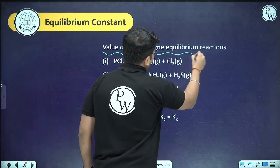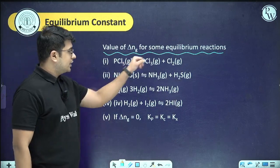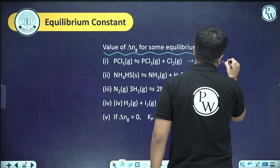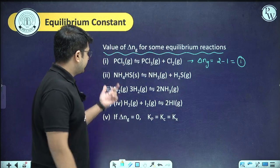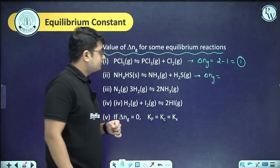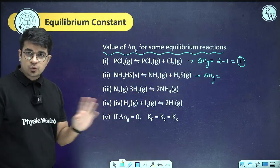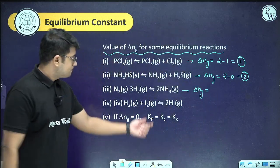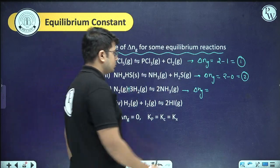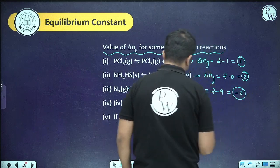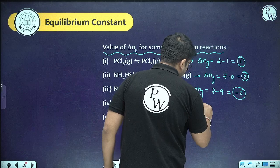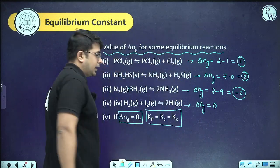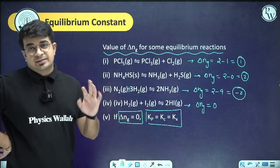Calculating ΔNg for various reactions: For PCl₅(g) ⇌ PCl₃(g) + Cl₂(g): ΔNg = 2 − 1 = +1. For CaCO₃(s) ⇌ CaO(s) + CO₂(g): ΔNg = 1 − 0 = 2 (only gaseous moles counted). For N₂ + 3H₂ ⇌ 2NH₃: ΔNg = 2 − 4 = −2. For H₂ + I₂ ⇌ 2HI: ΔNg = 0. When ΔNg = 0, Kp = Kc = Kx — all values are the same.